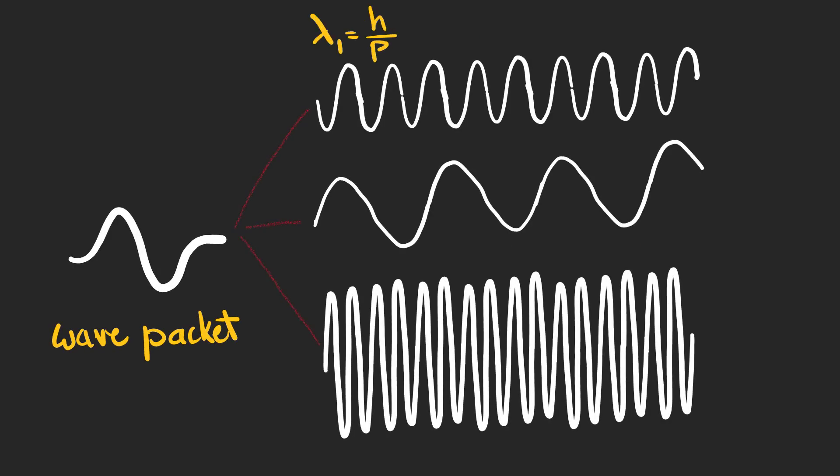A wave packet can be presented as a superposition of waves with different wavelengths, and based on the de Broglie hypothesis, different momentums. More wavelengths lead to a more localized wave packet.